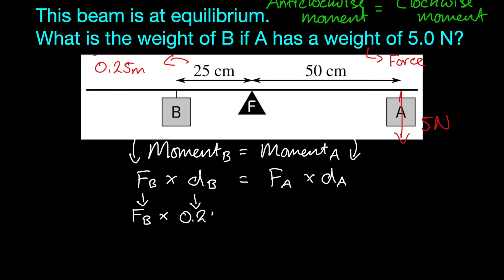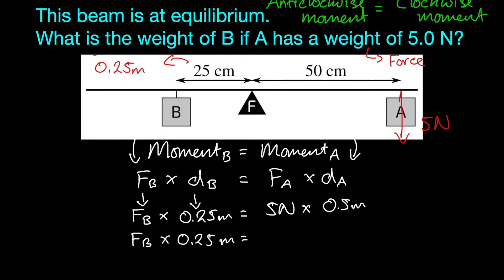So FB times 0.25 meters is equal to the force of A, which is 5N, times the distance of A. Once again, we're not going to use centimeters — instead we're going to use 0.25 meters. So FB times 0.25 meters is equal to 5N times 0.5. Let's put that into our calculator.